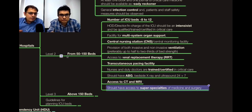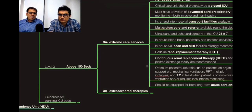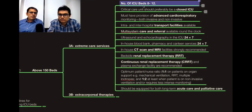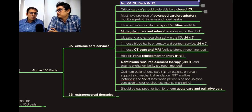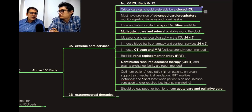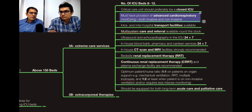For large hospitals of more than 150 beds, all the above facilities are required. ICU size is ideally 8 to 12 beds — 12 is the benchmark, because managing more than 12 beds per person becomes difficult. Beyond 12 beds you should create a new unit. It should be a closed unit with restricted entry — staff must don clean clothes before entering, and relatives are generally not allowed. Advanced cardiorespiratory monitoring, both invasive and non-invasive, should be available.